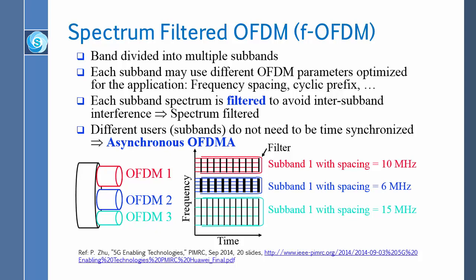Each spectrum subband is filtered to eliminate inter-subband interference. Crucially, different users do not need to be time-synchronized across subbands — this is called asynchronous OFDM. Users sharing the same subband still synchronize with each other, but users in different subbands do not. This overall technique is called F-OFDM (Filtered OFDM), and references for further reading are provided at the bottom of the slides.